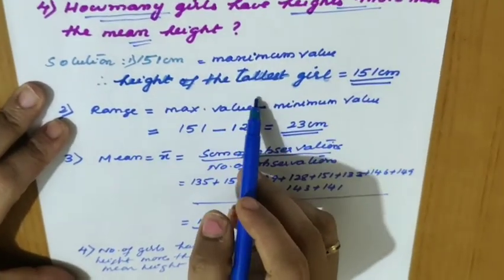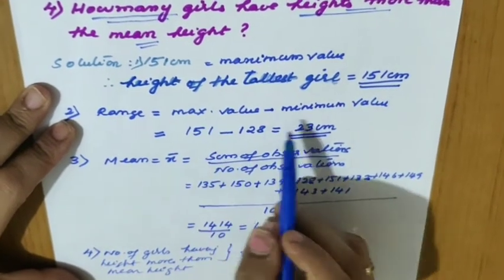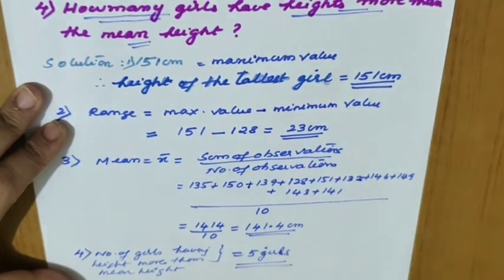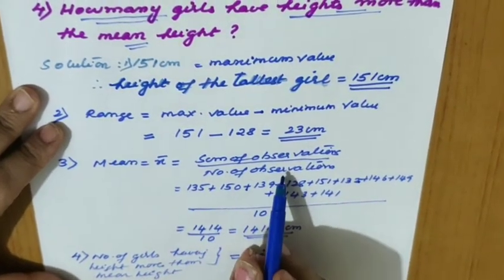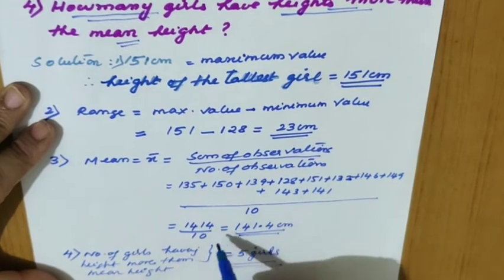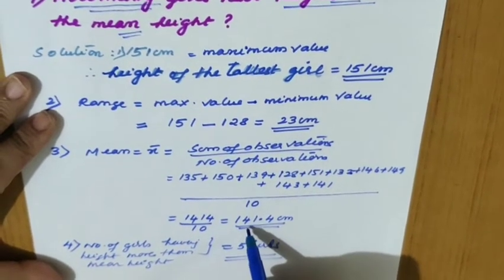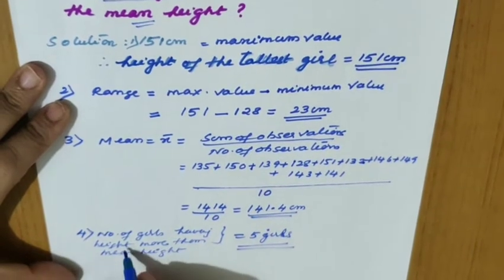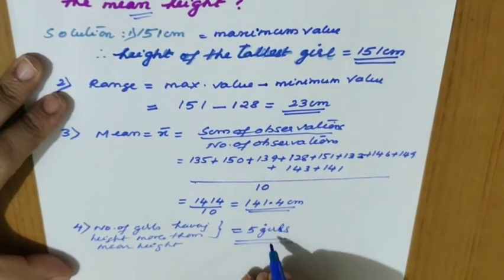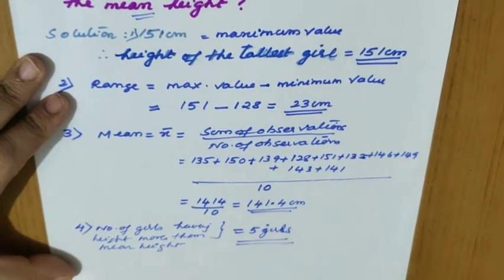To summarize problem 3: the tallest girl's height is 151 cm. The range is the difference between maximum and minimum — 151 minus 128 equals 23 cm. The mean equals sum of observations divided by total observations: 1414 divided by 10 equals 141.4 cm. Five girls have heights more than the mean height.